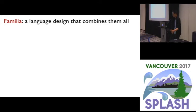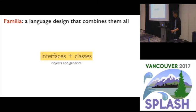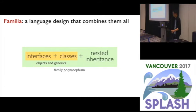Our language design called Familia builds on a single interface-class mechanism. Interfaces can express both type class constraints and object types, and classes implement those interfaces. Object-oriented polymorphism and constrained parametric polymorphism both fall out from this reinterpretation of interfaces and classes. By further allowing both interfaces and classes to be nested and inherited, we arrive at a powerful form of family polymorphism that can be used to organize software at a large scale.